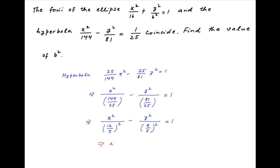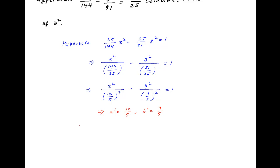Therefore, the length of the semi-major axis A' is equal to 12/5 and the length of the semi-minor axis B' is equal to 9/5. Now, the eccentricity E' of the hyperbola is given by the equation B'² = A'²(E'² − 1).